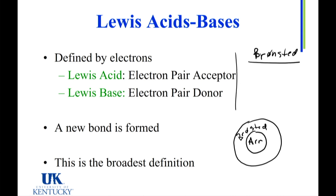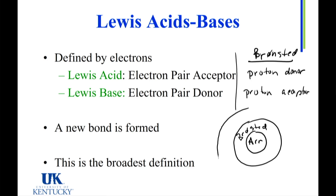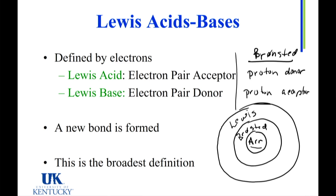The Bronsted or Bronsted-Lowry acid is a proton donor, and the Lewis base is the proton acceptor. That is how we defined it in terms of protons. And if we want to go a little further out in our circle, we have finally our Lewis definition. Something fitting the category of being an Arrhenius acid or base would also fit the definition of Bronsted and Lewis. But it's not necessarily true going the other direction — just because something is defined as a Lewis acid doesn't mean it fits the category of being an Arrhenius.